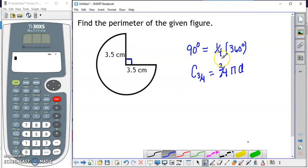We know that the radius of the circle is 3.5 centimeters. And the diameter is twice the radius, so it's going to be twice 3.5 centimeters. That's going to be 7 centimeters.